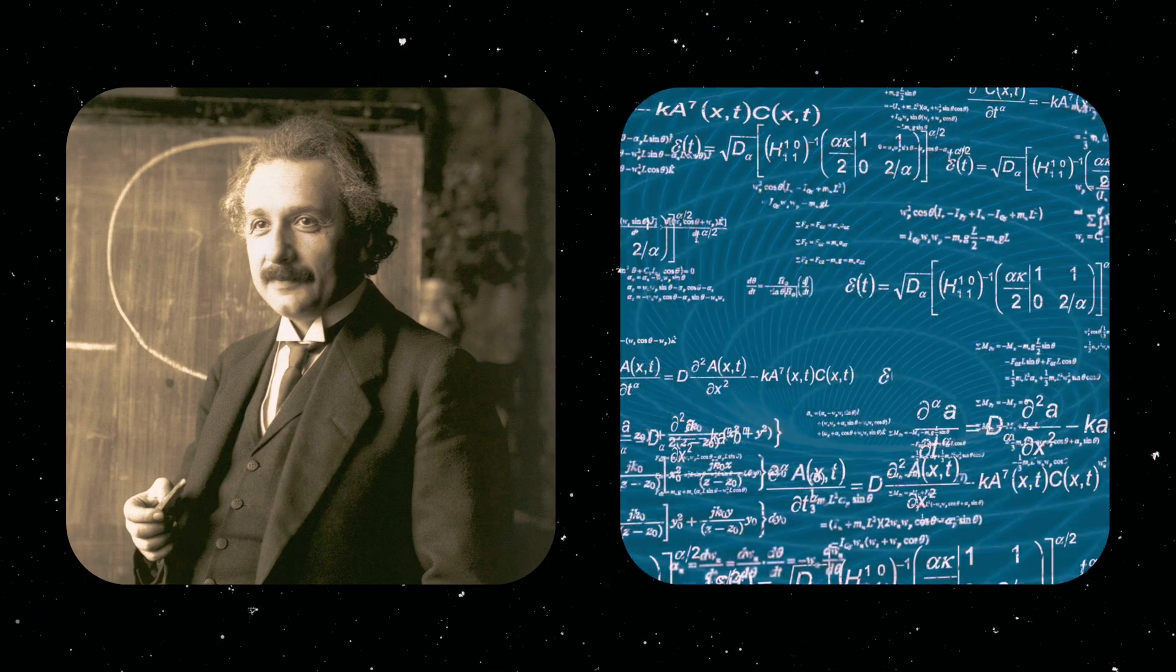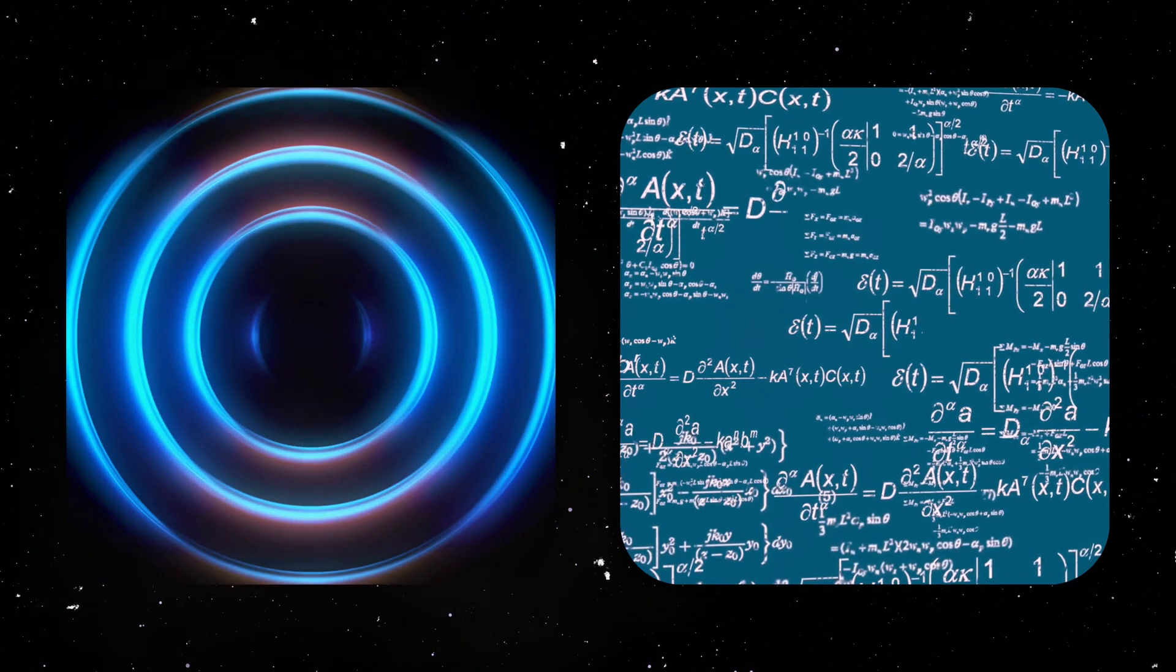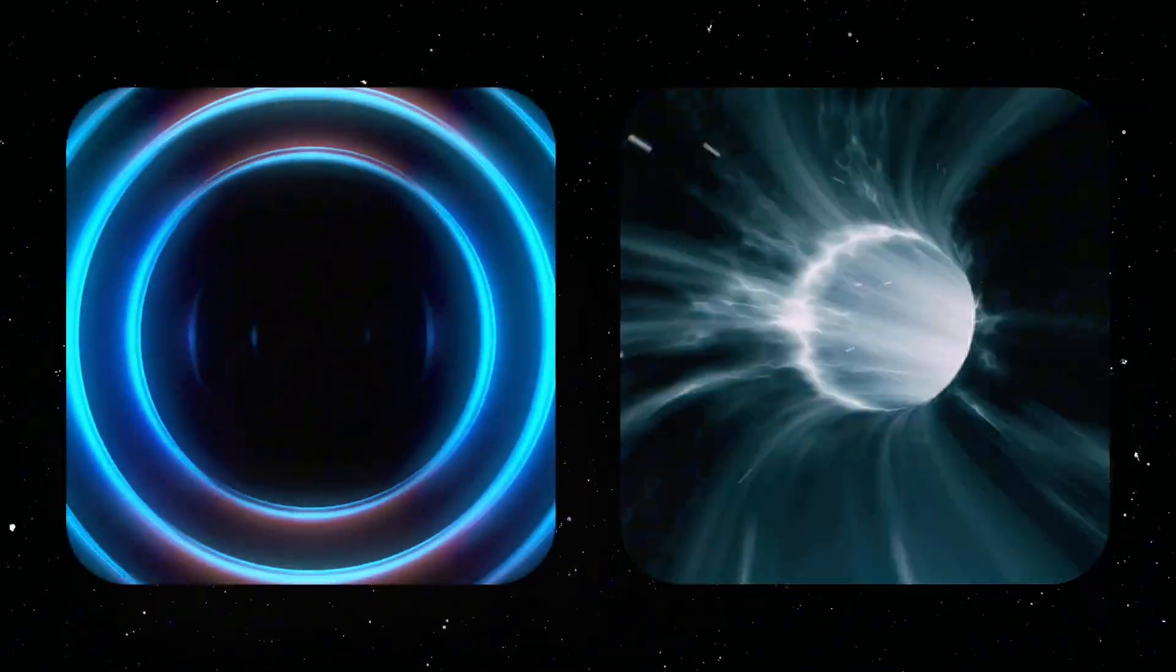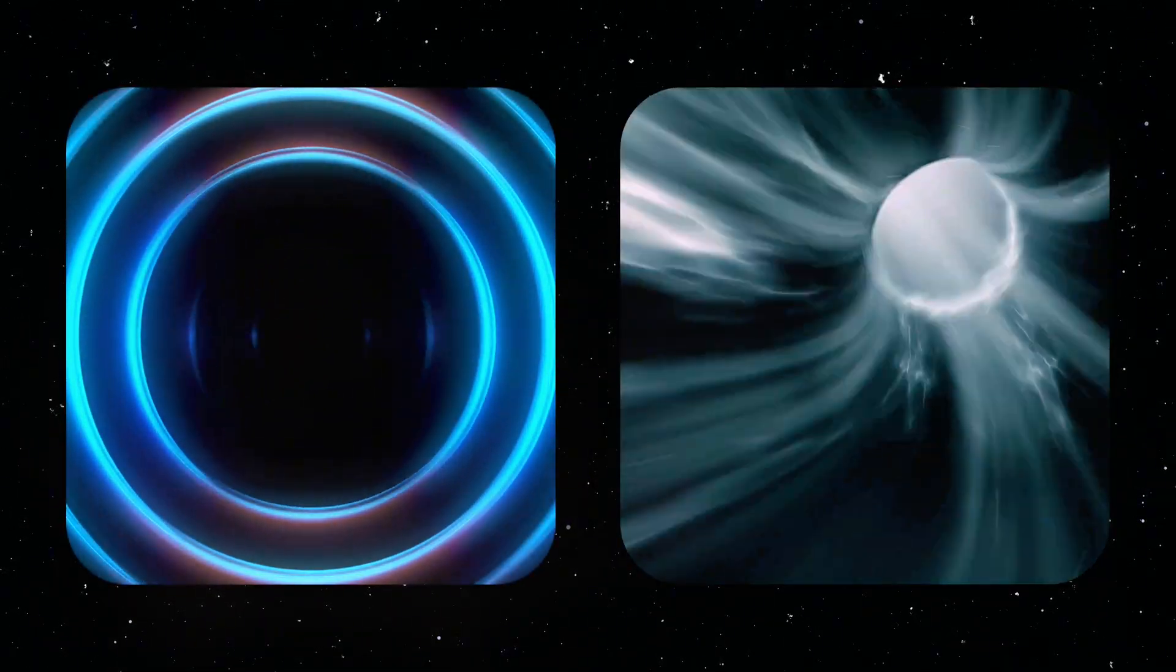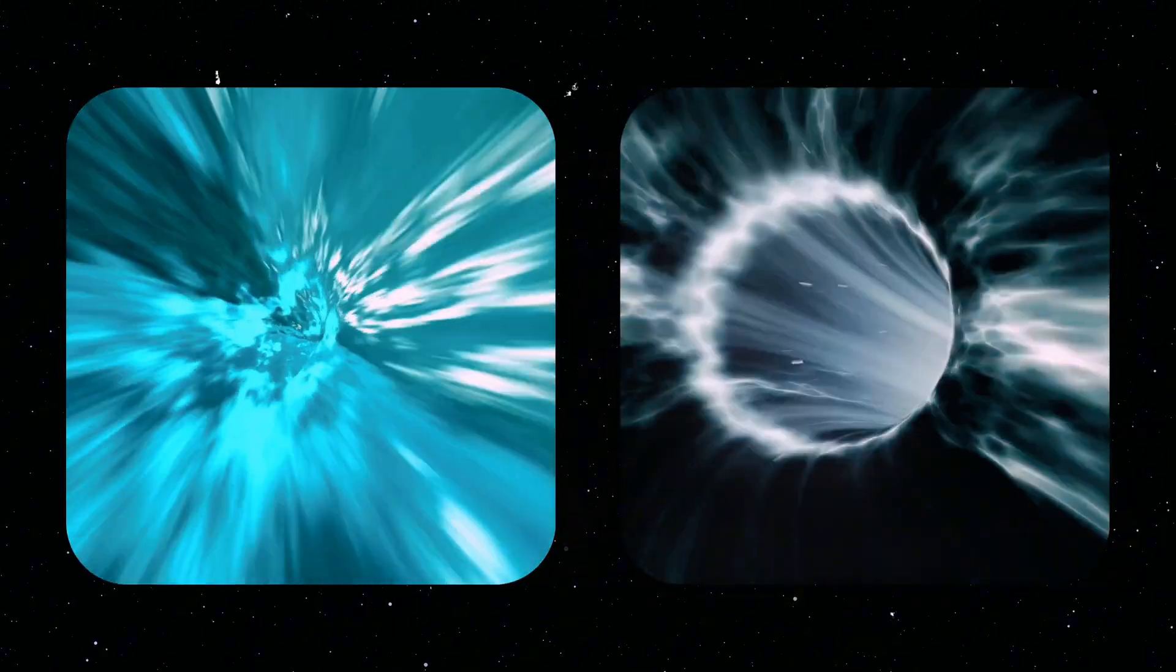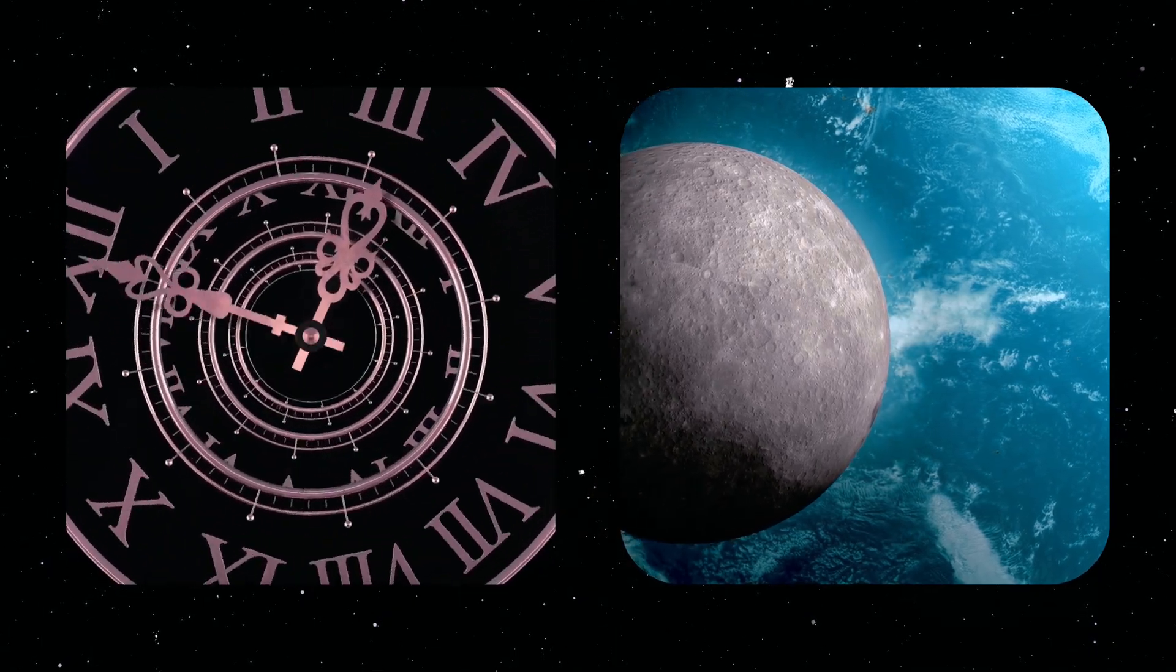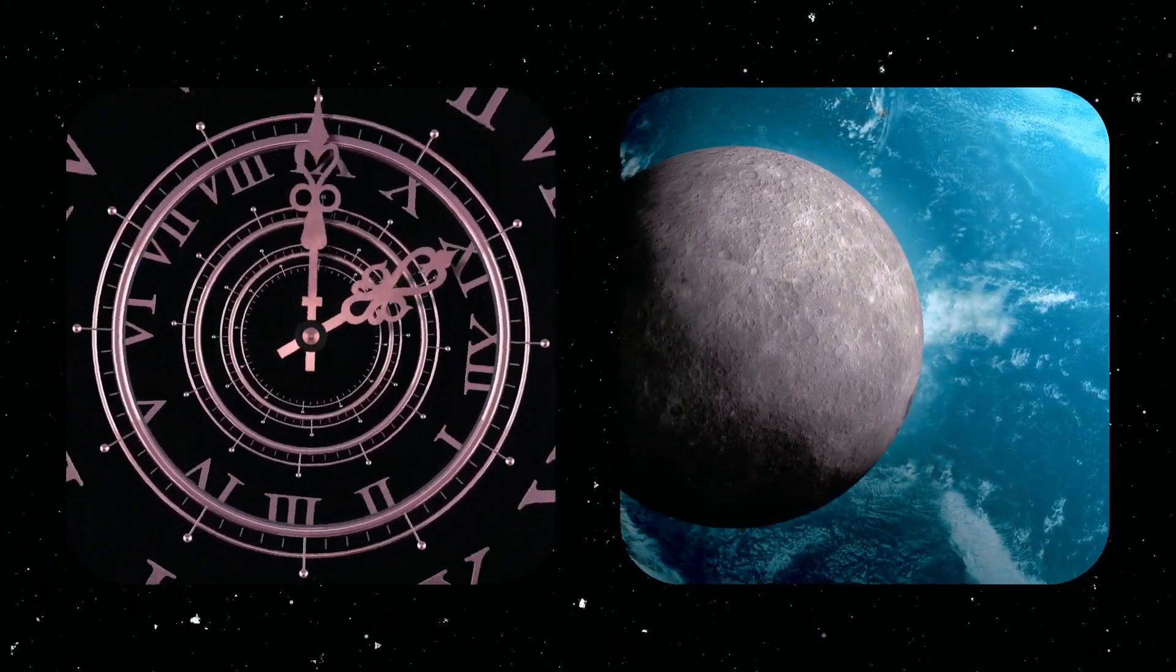Einstein's theory of relativity, which has been confirmed by countless experiments, tells us that no signal capable of carrying information can move through the universe faster than the speed of light. This speed is seen as the ultimate limit of the universe, governing everything from the movement of planets to the flow of time itself. It is a rule that seems unbreakable.